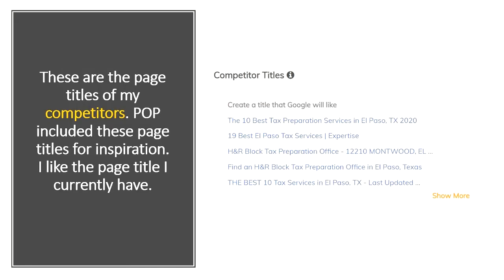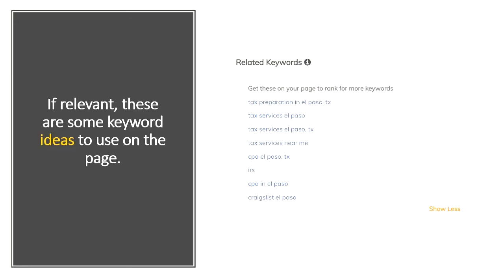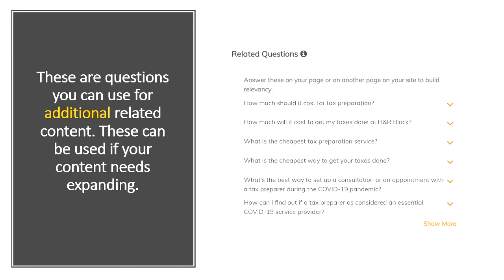These are my competitors' page titles — POP included these for inspiration. I like the page title that I currently have, so I'm not going to use these. If relevant, there are also some keyword ideas to use on the page to rank for more keywords. Some of these I may not use — for example, at the bottom it says 'credit list El Paso,' and I'm not going to use that one or the CPA term.